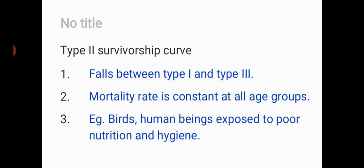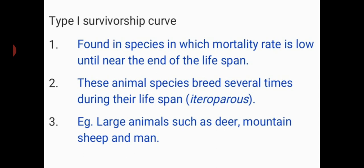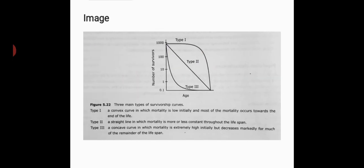Type 2 survivorship curve falls between type 1 and type 3. Here the mortality rate is constant at all age groups, so the chances of surviving of an individual is as good at one stage as another. Species showing this type of survivorship curve include birds and human beings exposed to poor nutrition and hygiene.